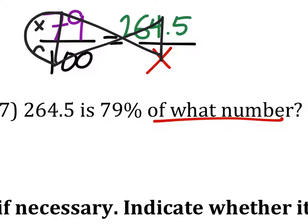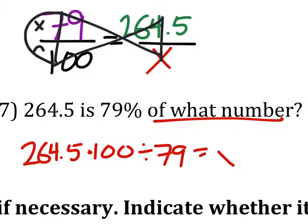So for this one, we've got 264.5 times 100 divided by 79. This would equal, for us, x. And this is something I would just do in the calculator, and it would give us the whole value.